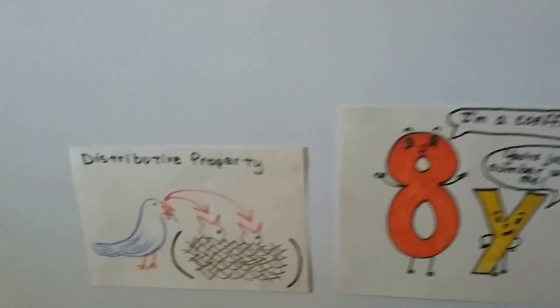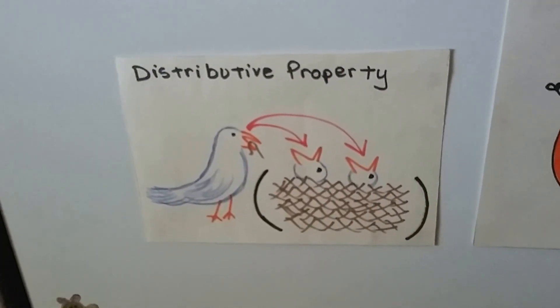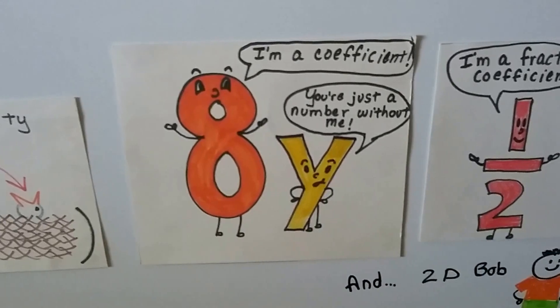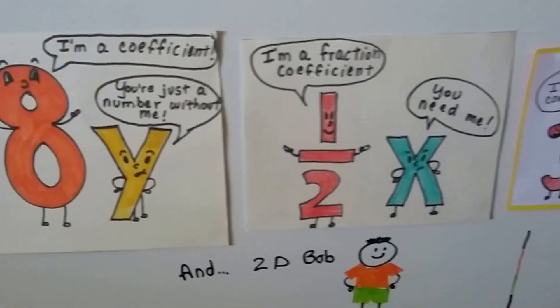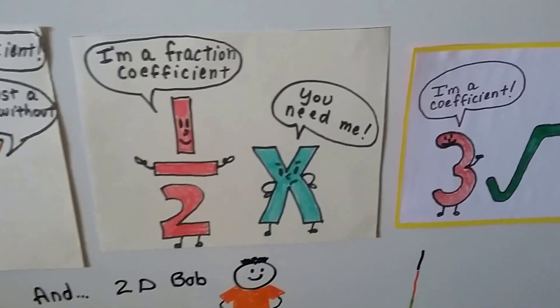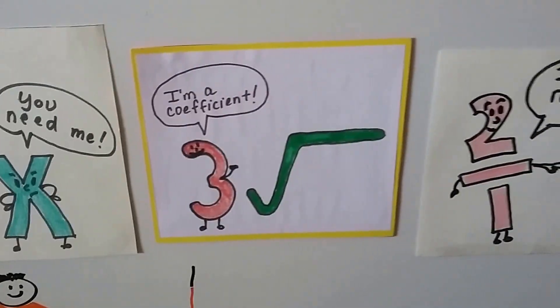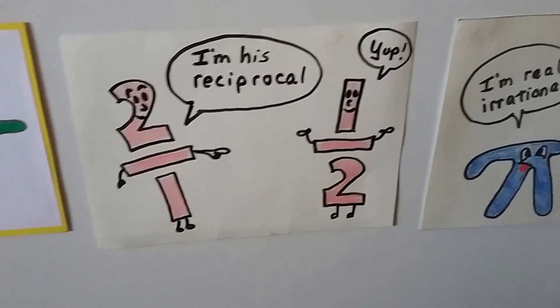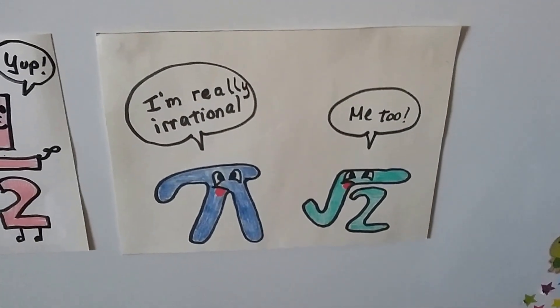We have characters. We've got the mother bird who teaches about the distributive property. We've got our numbers and our variables that teach you about coefficients and variables, and even fraction coefficients, and even for radicals, and reciprocals. And our irrational friends — they're a little crazy.